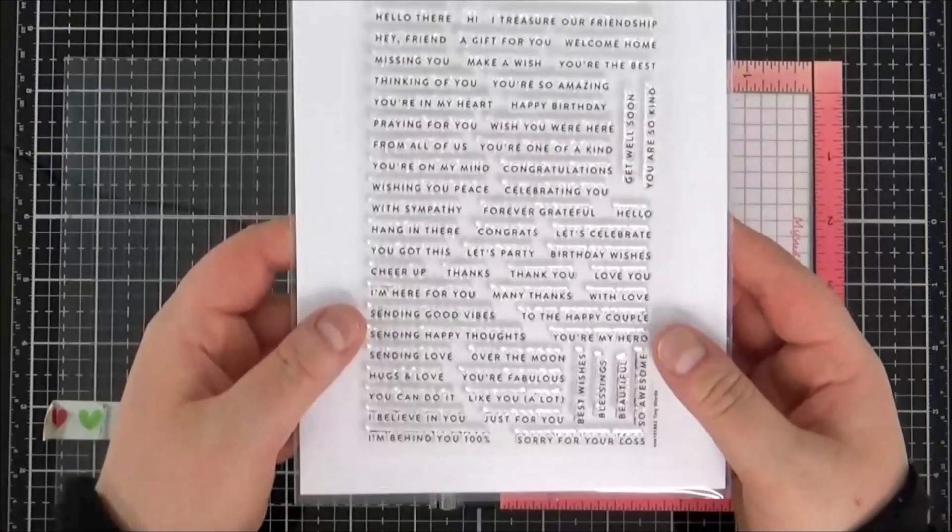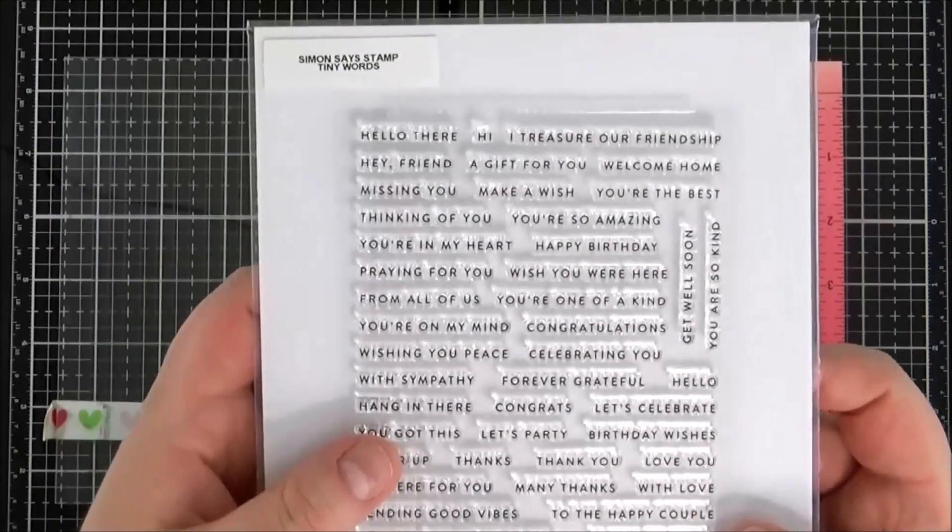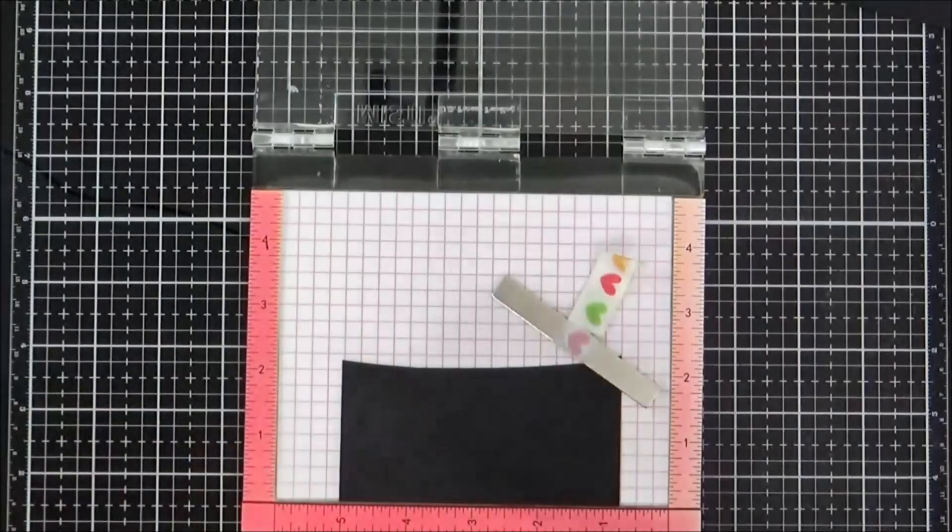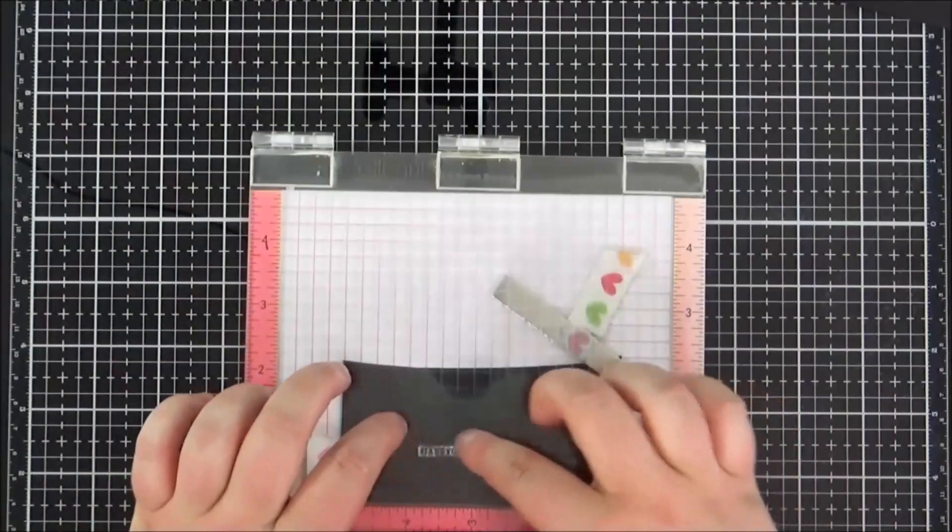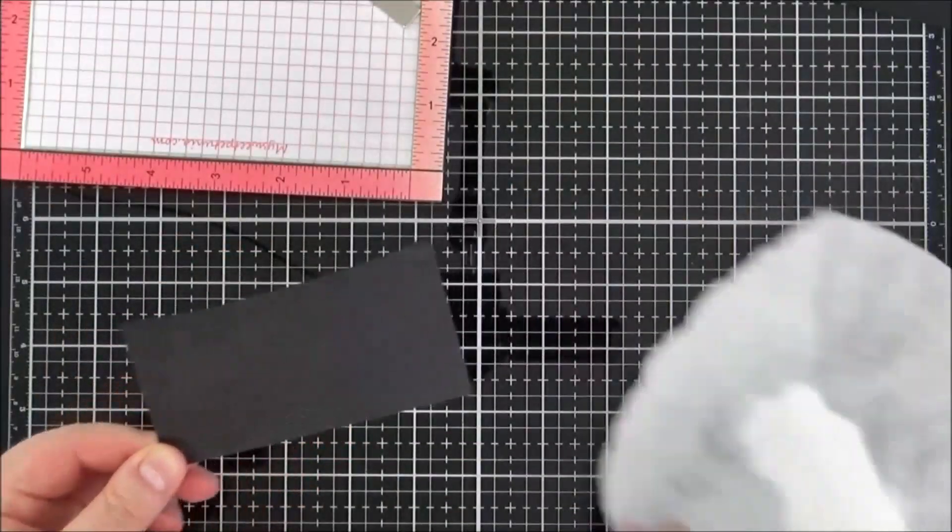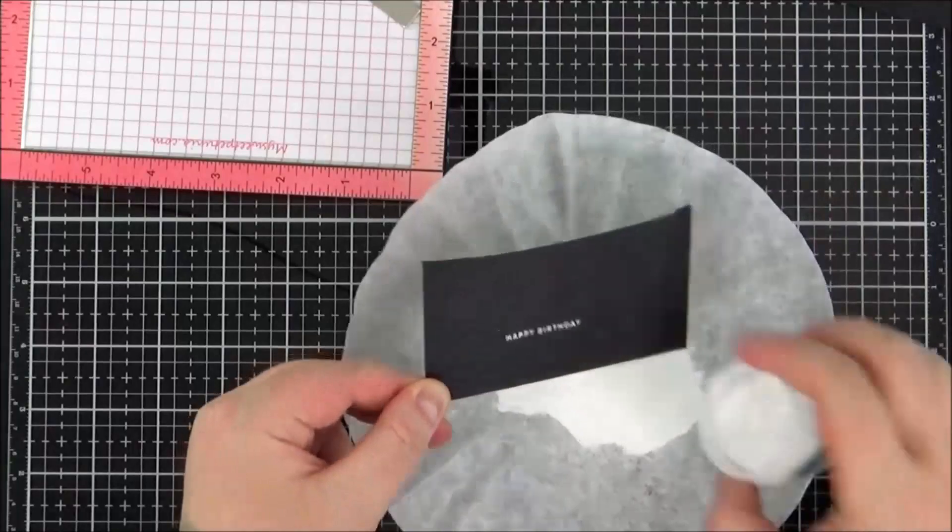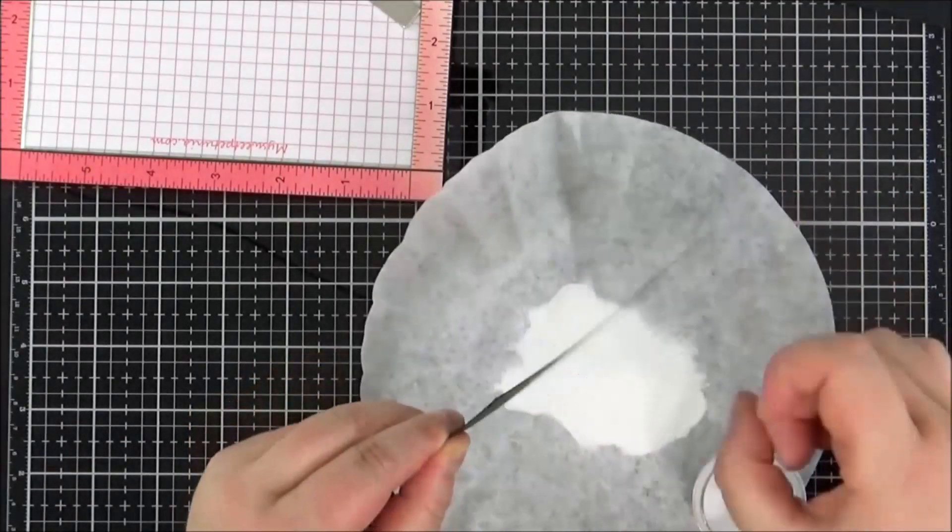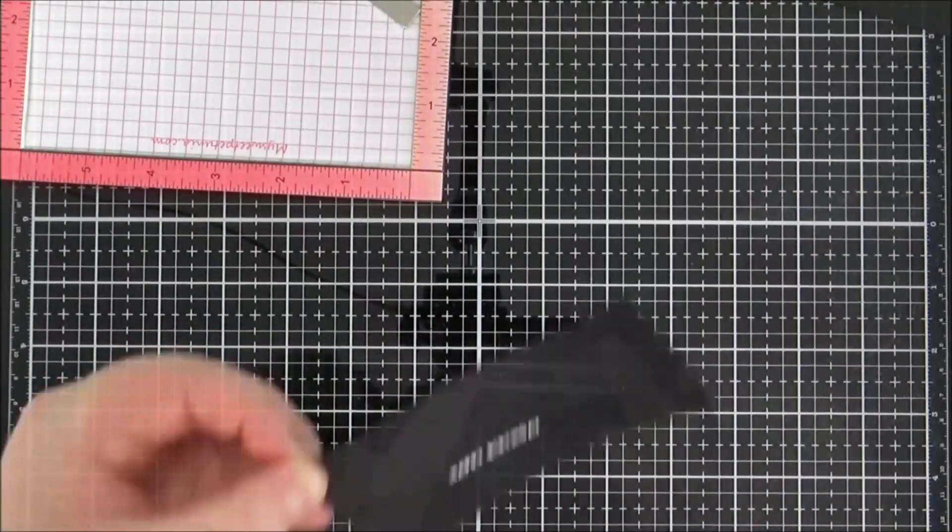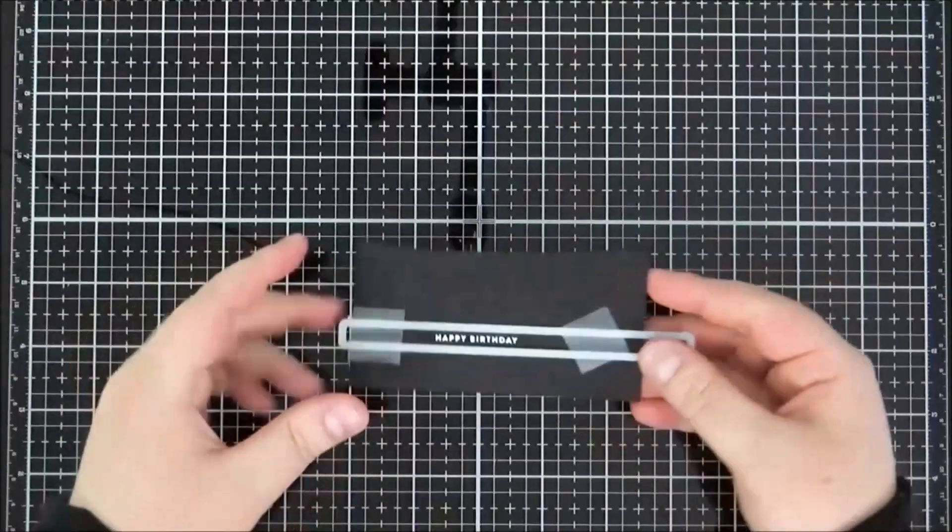Next I'm going to work on my sentiment. This is the Simon Says Stamp Tiny Words set, and I'm using the Happy Birthday from that set. I'm stamping it onto black cardstock and heat embossing with the Ranger Superfine White embossing powder.